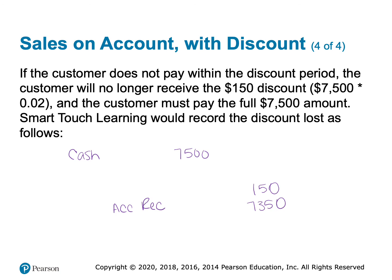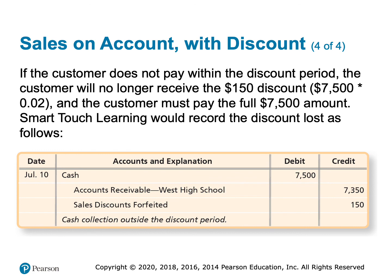That missing $150 credit goes to a new account called sales discounts forfeited, which is an interest revenue account — write that down, star, highlight, underline it. The FASB said if you offer customers a discount, you expect them to pay within 10 days. If they don't, you're giving them longer to pay, and the extra amount they pay is really interest — so it must be called interest revenue. Sales discounts forfeited is an interest revenue account and that becomes very important in Learning Objective 5.